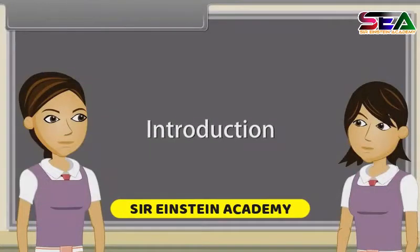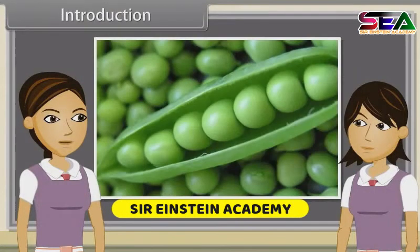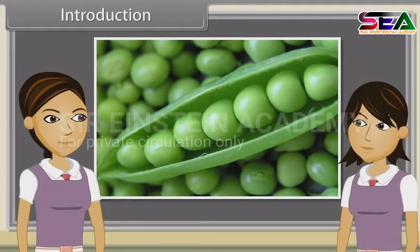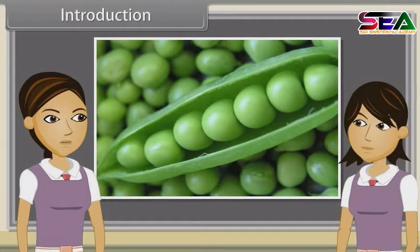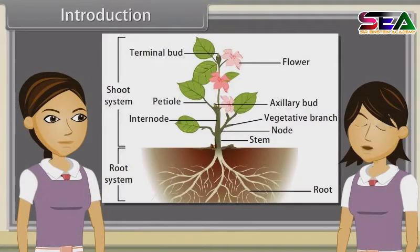In Greek, angiosperms — angion means a case, sperma means seed — are characterized by the enclosure of the ovules within an ovary, or plants with encased seeds or covered seeded plants. They are the most dominant plants of the present day.